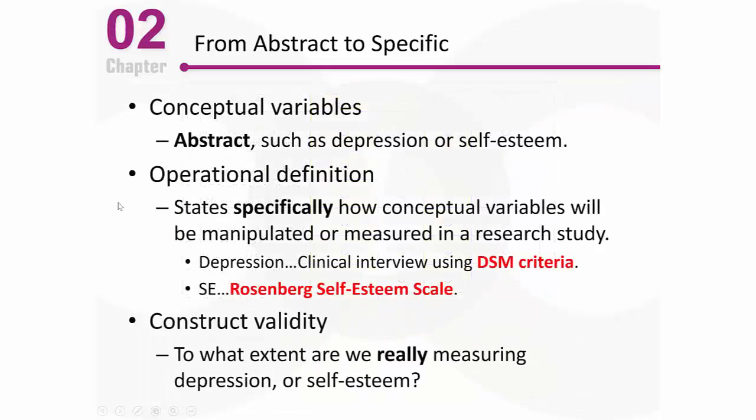Whenever we're measuring something complex and abstract like depression or self-esteem, not everybody's going to agree, and we want to make sure we're measuring what we really intend to measure — that's what construct validity is all about. Researchers worry about this. We don't need to worry about it too much for an introductory social psychology class, but I want you to understand this is serious business — we're measuring some things that are tough to measure.